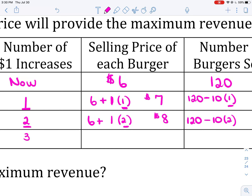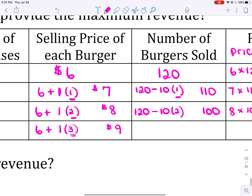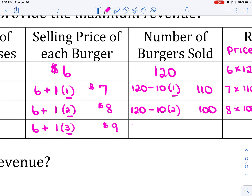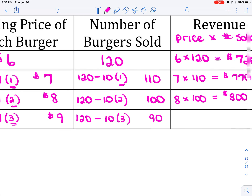What if I increase the price by $1 three times? Starting at $6, increasing by $1 three times gives a selling price of $9. The number sold is 120 minus 10 times 3, so 120 minus 30 equals 90 burgers. Revenue is $9 times 90, which is $810. I'm going up and up!